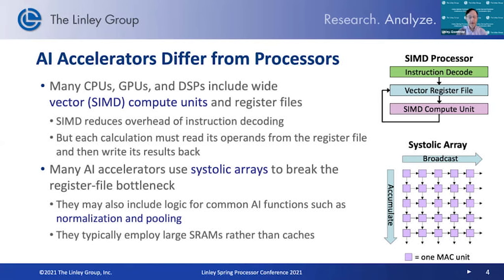We've seen the emergence over the past several years of AI accelerators as a different class of device than general-purpose processors. Initially, a lot of AI was done on CPUs, GPUs, and DSPs that use a SIMD-style architecture to parallelize and enhance computation throughput, which is much better than executing operations one at a time. But there's a bottleneck in that each instruction has to be decoded to create a set of SIMD operations. One of the differentiators in AI accelerators is the use of systolic arrays.